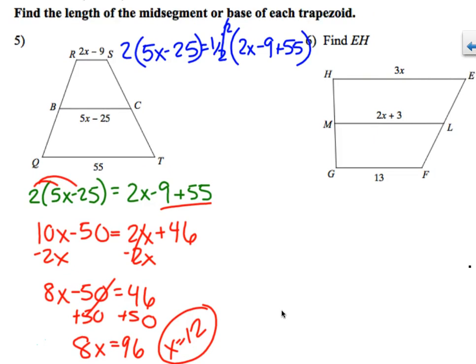But we're not done. We're never done. I want you to find the length of the midsegment or the base. So if I plug in 12, 5 times 12 minus 25 would be 35. And then 2 times 12 minus 9. 24 minus 9 is 15. So the base would be 15. The midsegment is 35. And then the bottom base is 55.